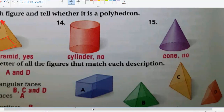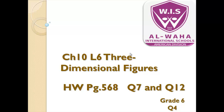Question eighteen: which figure has six faces? Counting: one up, one down, and one, two, three, four in the front — six faces. That is figure A. Your homework will be page 568, questions seven through twelve. See you on the Zoom session.